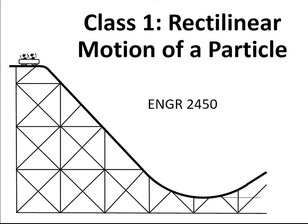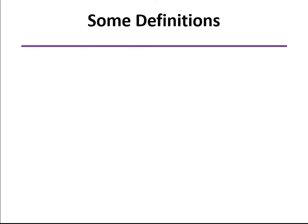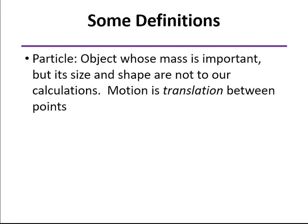Here's a summary of our first class, Rectilinear Motion of a Particle. We start out with a couple of basic definitions. First of all, defining what a particle is. It's an object where the size and shape are not really important. Only the mass is going to be important here. And so the motion of a particle is simply translation between points.